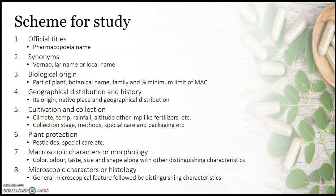The cultivation part focuses on different parameters which affect the growth and propagation of plants, such as the climatic conditions, temperature, rainfall, altitude, and other important parameters like fertilizers, pesticides, etc.